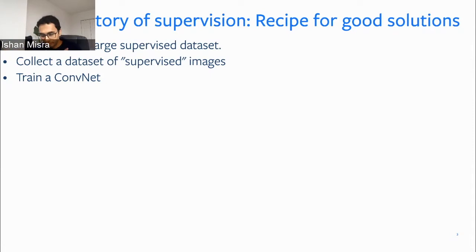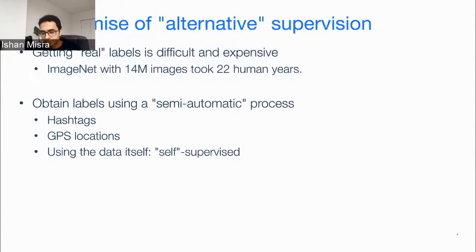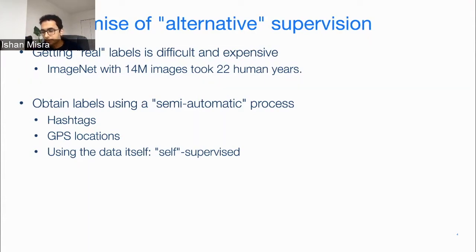If you have such a great recipe that's working, why do we even care about alternative forms of supervision? There are multiple arguments, but here's one I really care about: getting real labels is very difficult and expensive. ImageNet — the full dataset with 14 million images and 22,000 labels — took 22 human years to label entirely. And it just has fairly basic noun classes; it doesn't have verb classes, adjective classes, or phrases. Getting that noun supervision for just 14 million images is actually fairly time-consuming.